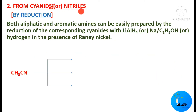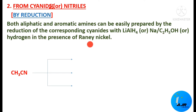The next method is from cyanides or nitriles, called the reduction method. Here both aliphatic and aromatic amines can be easily prepared by the reduction of the corresponding cyanides, using either lithium aluminium hydride, sodium and ethanol, or hydrogen in the presence of Raney nickel.